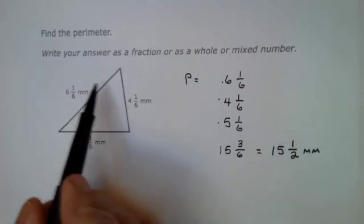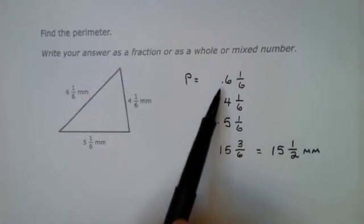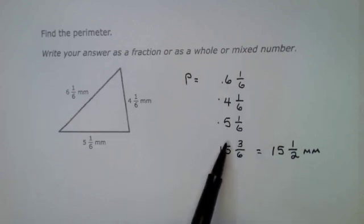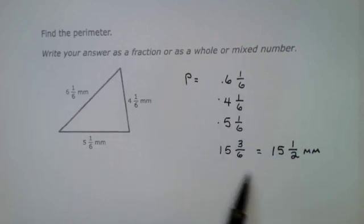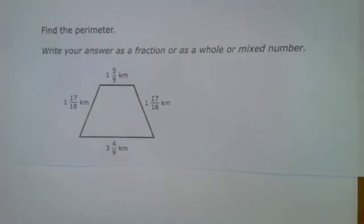So when the numbers are different, I simply add the whole numbers, add the fractions together. Let's look at another problem where the fractions are different. To find the perimeter, I need to add all these up.